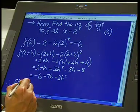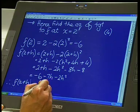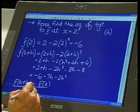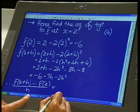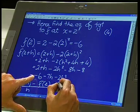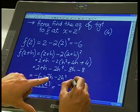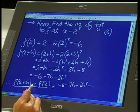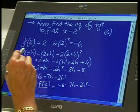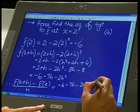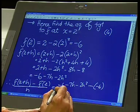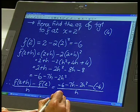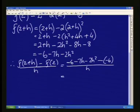Now I've gone and I've worked out my two y values. Now my formula tells me subtract the 2 and divide the answer by h. So f of 2 plus h minus f of 2 divided by h then will give me this minus 6 minus 7h minus 2h squared. Now be careful, a double negative. My f of 2 was minus 6.